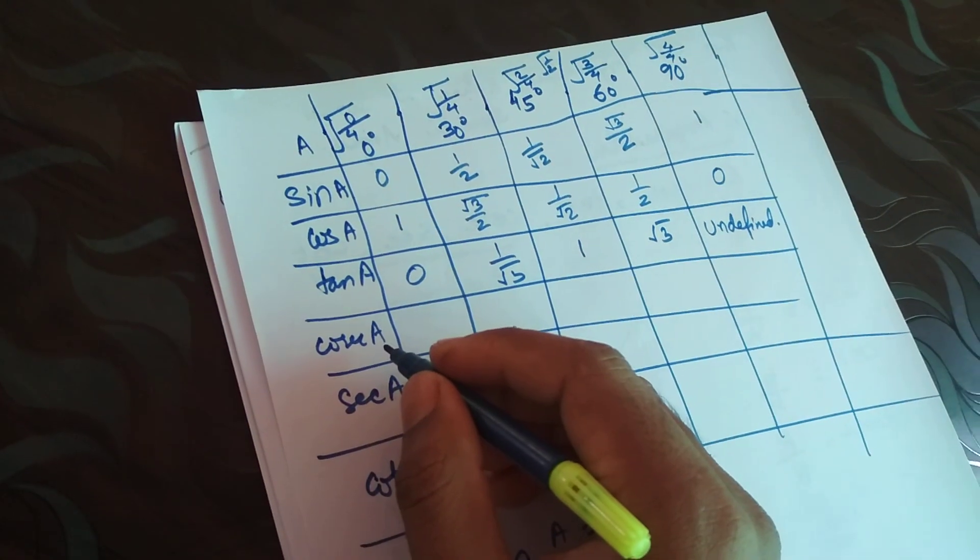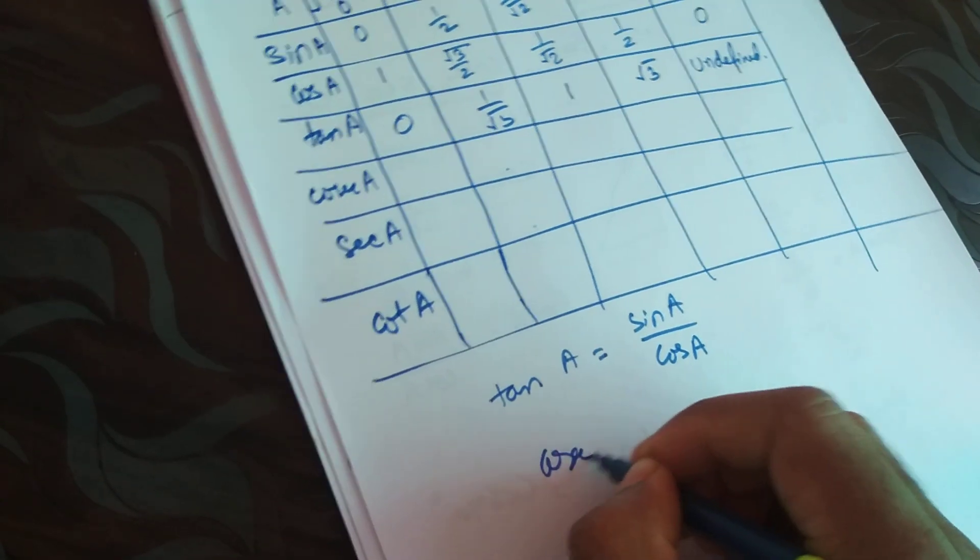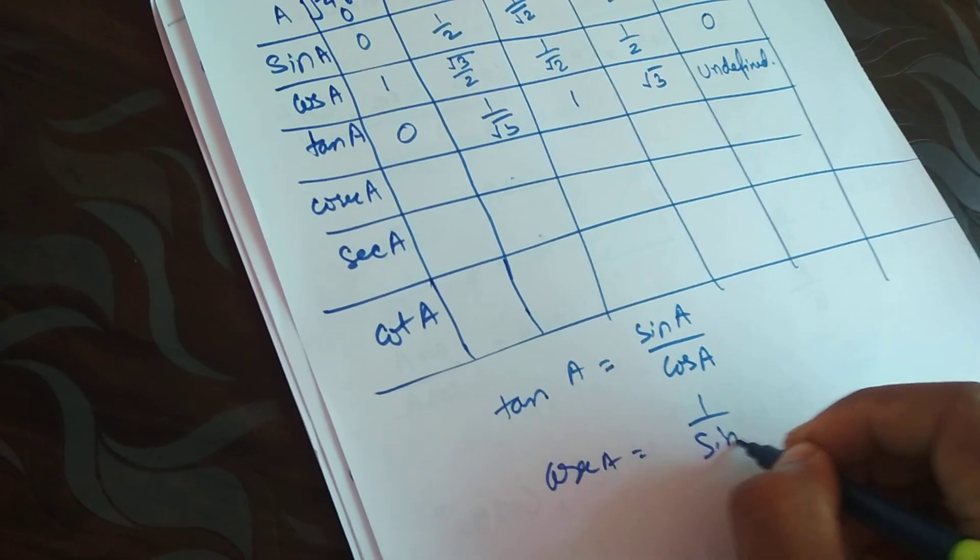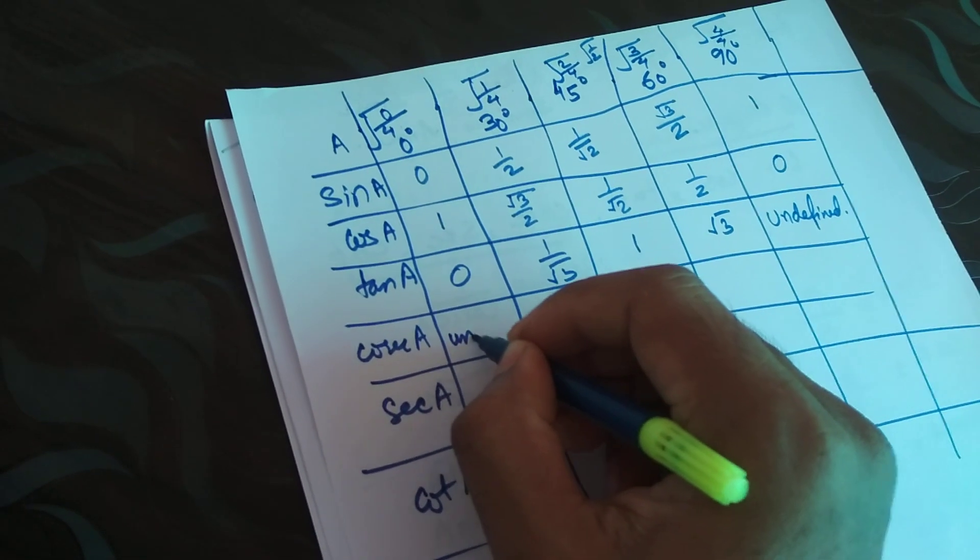Similarly for cosec A - we have already discussed cosec A is nothing but 1 by sine of A. I will just reverse it. 1 by sine A: 1 by 0 is undefined.